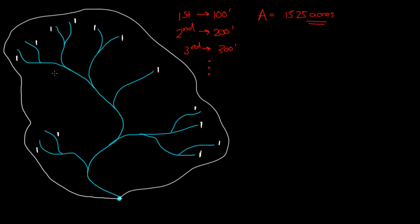Where a first-order and a first-order stream come together, they make a second-order stream. At this point the stream is two. This one and one meet here — they make a second-order stream. This one and one meet here — they make a second-order stream. This one is lonely. This one and this one meet here, they make a second-order stream. This one here, they make a second-order stream. One and a one here, they make a second-order stream.